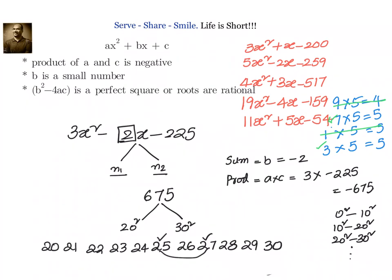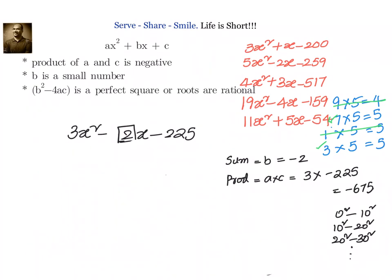Once we are done with that, once we know the numbers, after that it's the same. We can just go ahead and factorize it. We found out that the numbers are 25 and 27. I will write down 3x² minus 27x because sum is negative, big number should be positive.